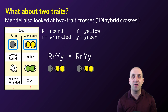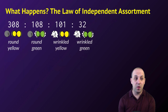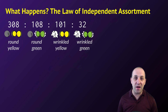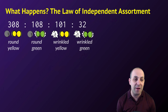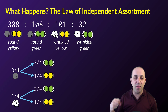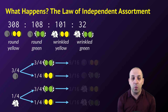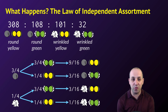Mendel crossed a plant heterozygous for both traits with itself. He gets four different phenotypes — all possible combinations. To understand this, we need the law of independent assortment, which says the probabilities associated with each trait are independent of each other. Looking at seed shape: two heterozygotes give three-quarters round and one-quarter wrinkled. Within each group, three-quarters yellow and one-quarter green. So we wind up with nine-sixteenths round and yellow, three-sixteenths round and green, three-sixteenths wrinkled and yellow, and one-sixteenth wrinkled and green.